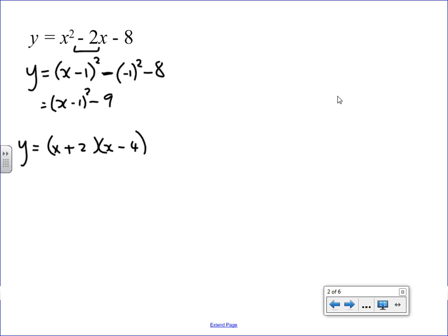So, this turning point, this has gone right 1, down 9. The factorised form, so the turning point is going to be 1 minus 9. Write 1 down 9. The roots, the x-intercepts, will be minus 2 and 4. I can work out the y-intercept by putting in x as 0. When x is 0, y is 0 squared minus 2 lots of 0 minus 8, which is minus 8.